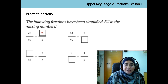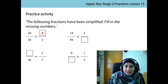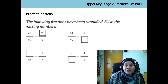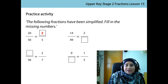Let's look at the next example. Now the denominator is missing, so I'm looking at the proportional relationship between the two numerators. How do I get from 14 to 2? I need to divide by 7. So 49 divided by 7 is 7.